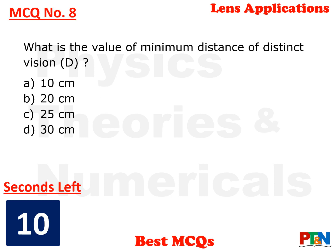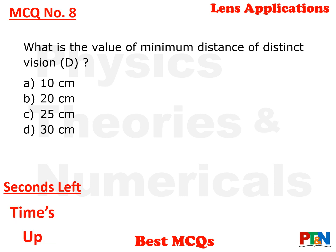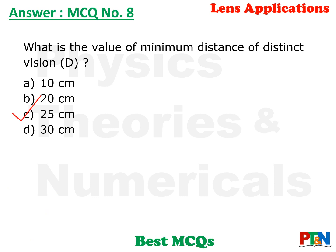Next MCQ: what is the value of minimum distance of distinct vision — that is, the closest place at which we can clearly see? What value is taken for various designs? Options: 10 cm, 20 cm, 25 cm, or 30 cm. You have 10 seconds. Time's up. The answer is option C, that is 25 centimeters. That is the least distance or minimum distance of distinct vision.